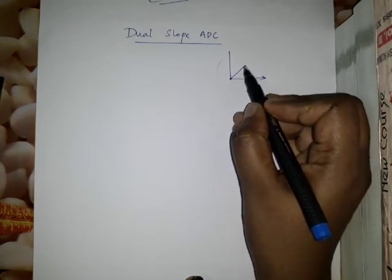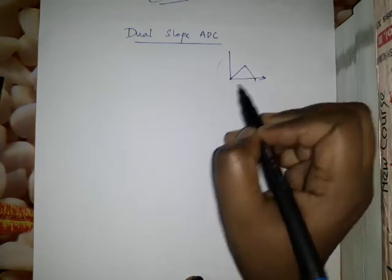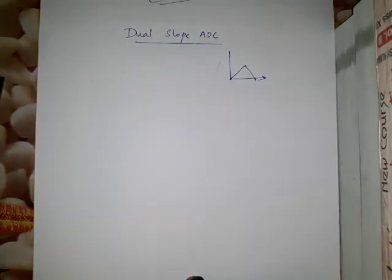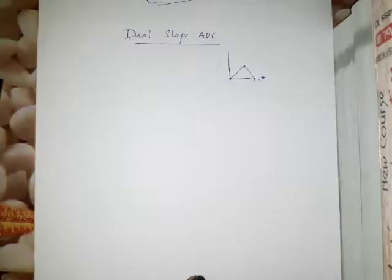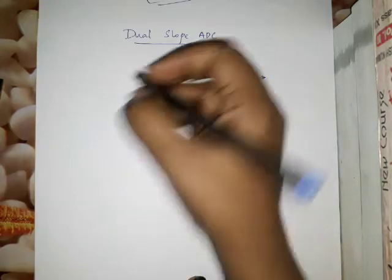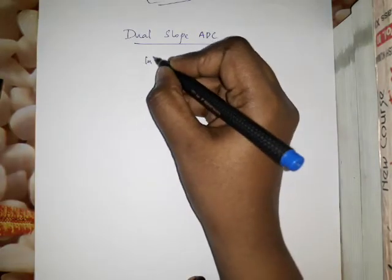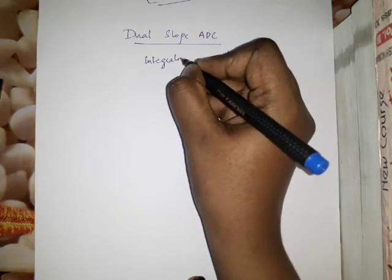This is a triangular wave. How can we generate a triangular wave from a circuit? Using an integrator we can create a triangular wave, so in the dual slope ADC circuit we need an integrator.